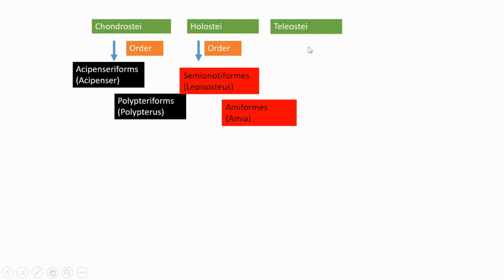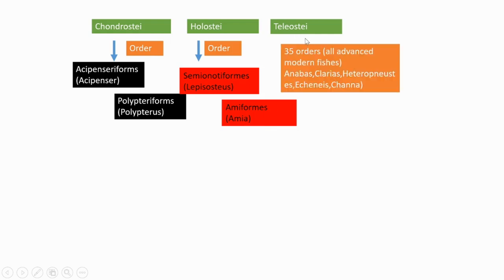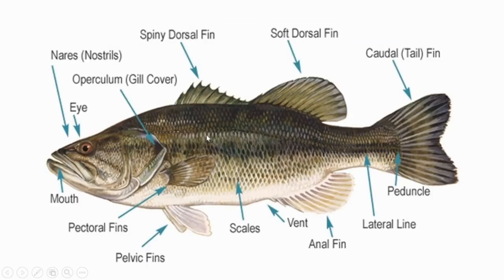Teleostei is a big group and under it 35 orders are coming, covering almost all advanced modern fishes like Anabas, Clarias, Heteropneustes, and others. In this chapter a very important thing is that you have to memorize and recollect very fast all the classification and its sub-classifications.